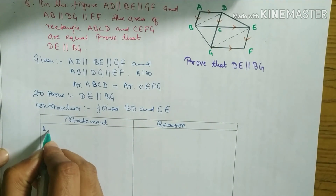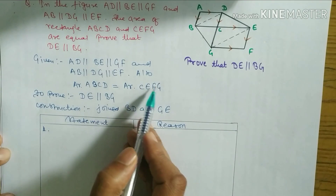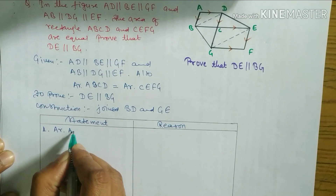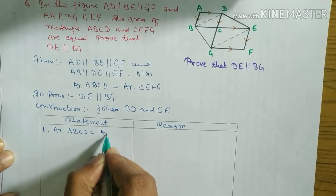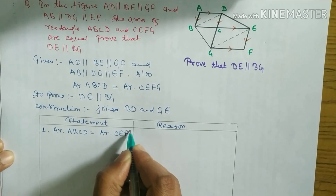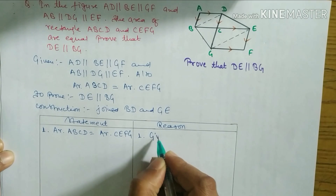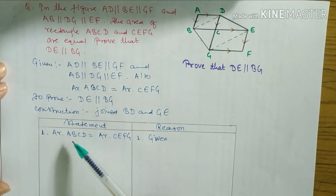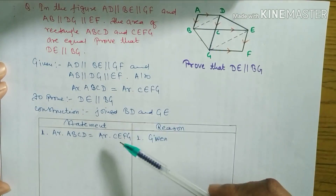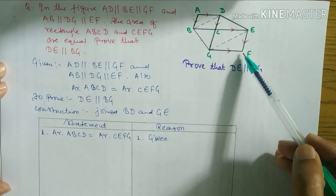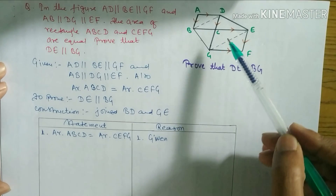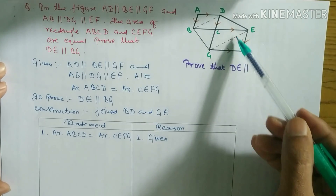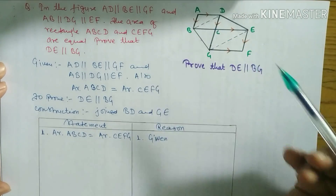Now for statement number one, I write: Area of rectangle ABCD is equal to area of rectangle CEFG. The reason is: Given — because in the question it is already given that these two rectangles are equal. Look at the diagram: ABCD and CEFG — these two areas are equal. I mistakenly drew this one a little bigger, but the area is equal.